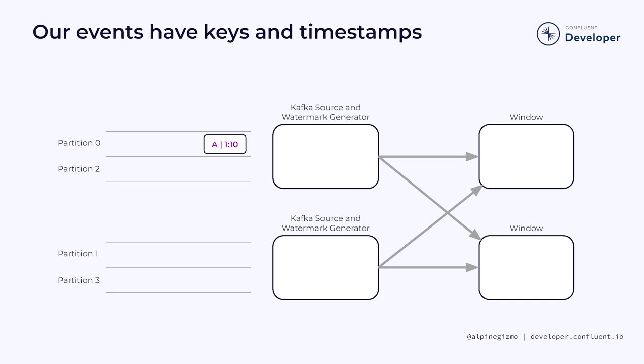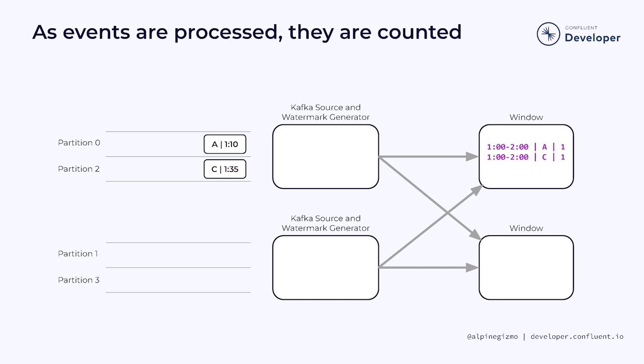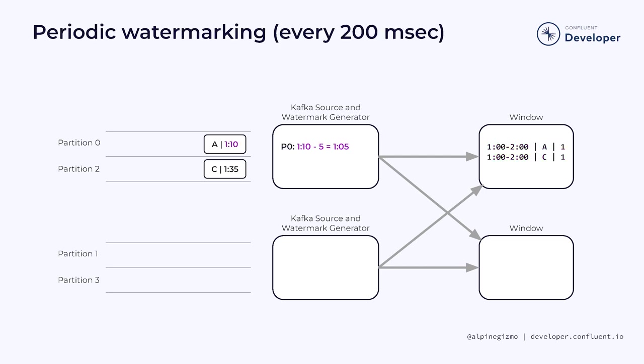In this example, each instance of the Kafka source operator is reading from two Kafka partitions. We need this much parallelism to fully explore what happens when Flink generates and propagates watermarks. Here is a sample event with a key of A and a timestamp at 10 minutes after 1 o'clock, and here is another event on the other partition connected to this same source. After processing these two events, our window has recorded one event for A and one event for C during the window from 1 to 2 o'clock. By default, every 200 milliseconds, the Kafka source is asked to generate a new watermark.